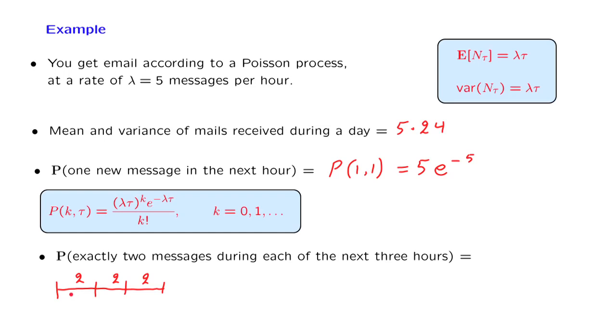For the Poisson process, we have assumed that different time intervals are independent of each other. So what we need to do is to multiply the probability of two messages in this hour with the probability of two messages in that hour, and the probability of two messages in that hour. On the other hand, for each one of the hours, the probability is going to be the same. So it's enough to take the probability of two messages during this hour,